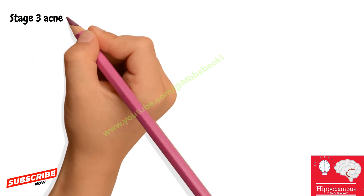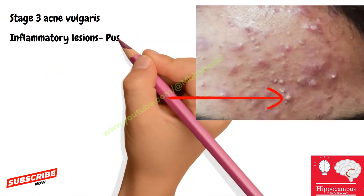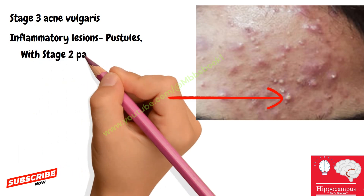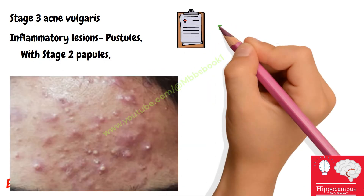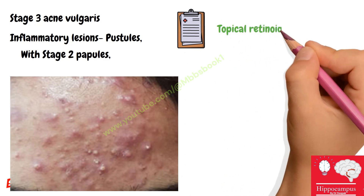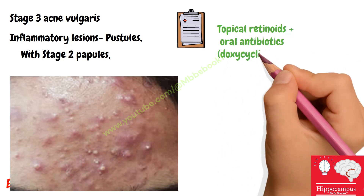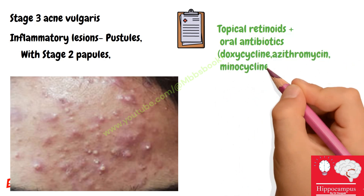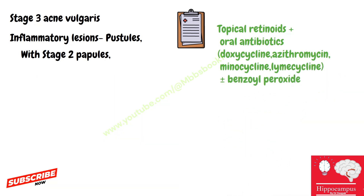In stage three there is pustule formation which cannot be treated with topical drugs alone, so we start oral antibiotics. Stage three also includes stage two lesions, so treatment combines topical retinoids and topical antibiotics along with oral antibiotics such as doxycycline, azithromycin, minocycline, and lymecycline.